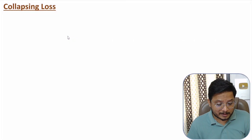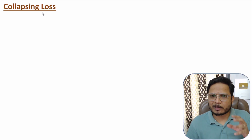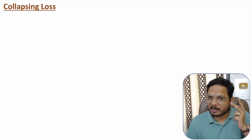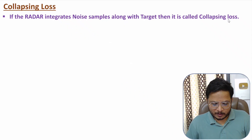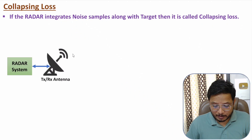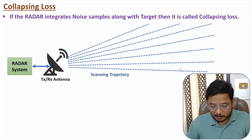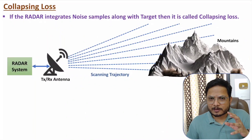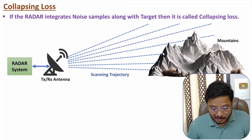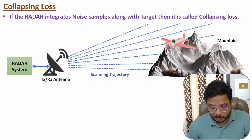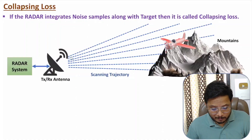Next is collapsing loss. This occurs when the radar integrates noise samples along with target signal. For example, consider a radar transmitting signals while a mountain is present in the scene. The mountain continuously reflects echo signals back as noise. When a target object also appears, the radar receives echo from both the target and the mountain. The signal getting collapsed with the noise signal produces collapsing loss.